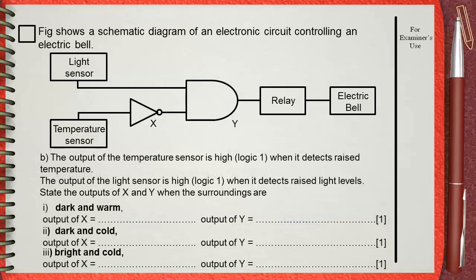Question B. The output of the temperature sensor is high, logic 1, when it detects raised temperature. The output of the light sensor is high, logic 1, when it detects raised levels of light. State the outputs of X and Y when the surroundings are: